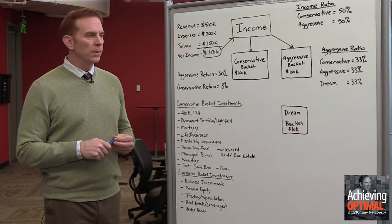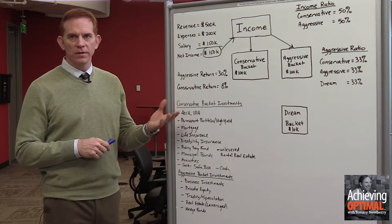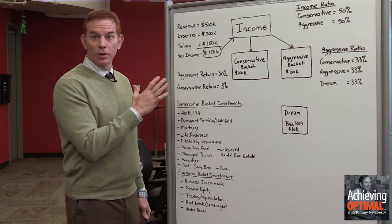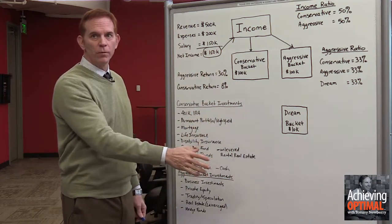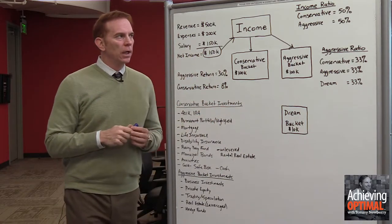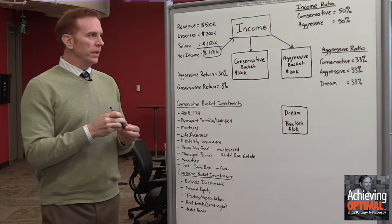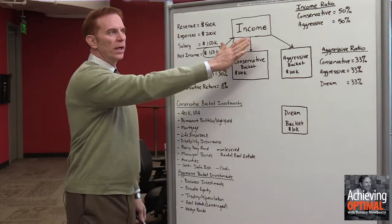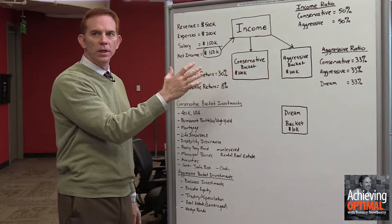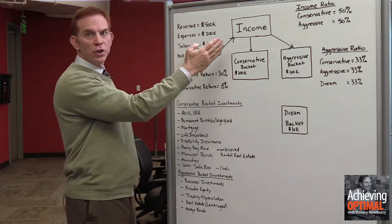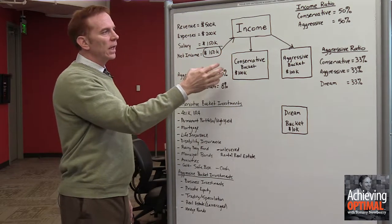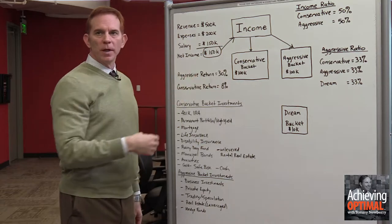On the Achieving Optimal podcast, Tommy and I were talking about the three-bucket saving system, and we thought it might be helpful for you visual learners out there to actually have a diagram where I just take a few minutes and work through how this works. So quite simply, we're going to start off with our income source — our primary source of income — whether we have a job with a salary or we own a business. In this case, we're going to talk about a business owner.